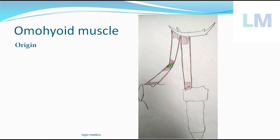Insertion — this muscle has two bellies: the inferior belly and the superior belly. The inferior belly and superior belly are connected by an intermediate tendon, which is overlapped by the sternocleidomastoid. The insertion is at the hyoid bone via the superior belly — specifically the lower border of the body and the greater cornu of the hyoid bone.